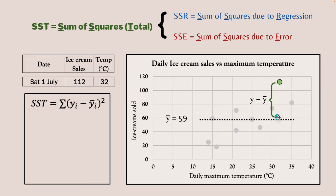Let's move on to R squared. R squared is a very widely used calculation. The way it's done is SSR divided by SST - the explained sum of squares divided by the total. In other words, what proportion of the variation in ice cream sales is being explained by daily temperature? It ranges between 0 and 1. To generalize: R squared is the proportion of the variation in the Y variable being explained by the variation in the X variables.